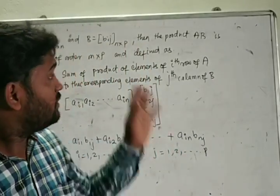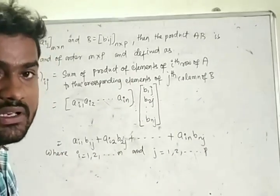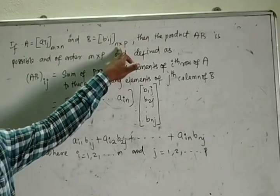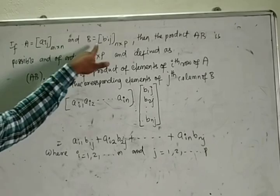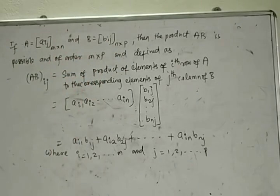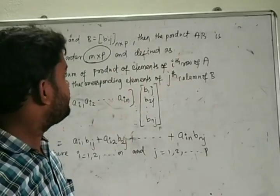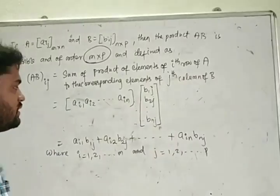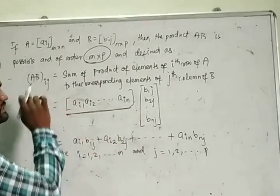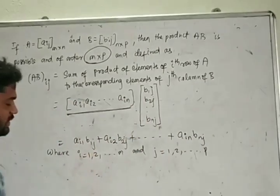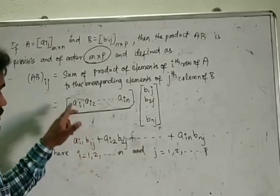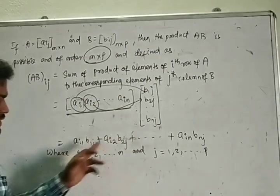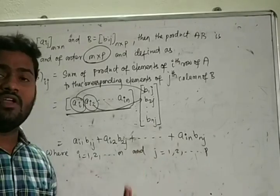Now we will find the product of two matrices. Let A be a matrix of order m×n and B be a matrix of order n×p. The number of columns of A equals n, and the number of rows of B equals n, so the product AB is possible and is of order m×p. The element at position (i,j) of AB is defined as: a_i1·b_1j + a_i2·b_2j + ... and so on, where i goes from 1 to m and j goes from 1 to p.